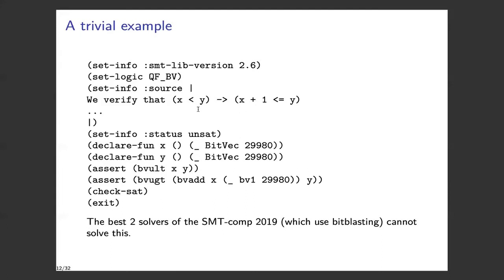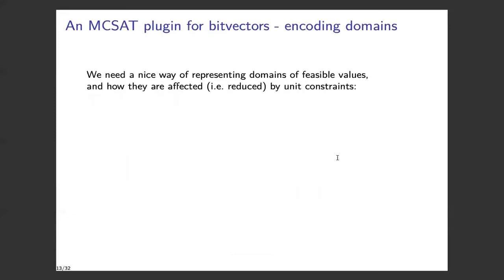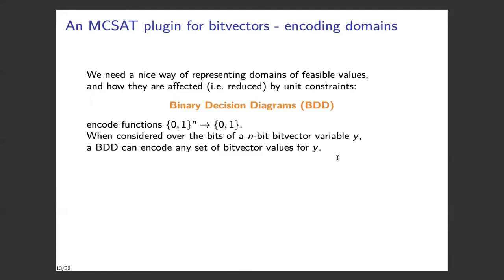For example, consider the theorem X + 1 ≤ Y, where X and Y have a huge bit width of almost 30,000. The best two SMT solvers from SMT-Comp 2019 cannot solve this — both use bit blasting — but MCSAT can solve this. In order to turn the theory of bit vectors into a plugin for MCSAT, we first need a nice way of representing domains of feasible values. For this, we use binary decision diagrams (BDDs) that encode functions from n bits to one bit. BDDs over the bits of an n-bit bit vector variable Y represent sets of bit vector values for Y.